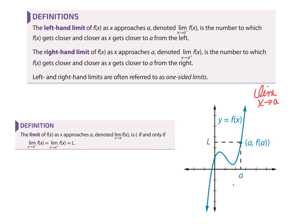Here's the key: a limit does not say 'evaluate the function at a.' In a piecewise function you could jump, and evaluating may mean different things depending on where you are. Or you could have a hole — a removable discontinuity — and you can't evaluate at a because there's a hole. So the limit doesn't necessarily mean what is the function at that point; it means what is the function doing as you get close to that point.